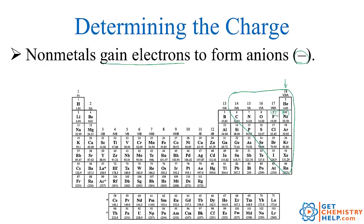If fluorine gains one electron, it becomes negative. Chlorine is one away from argon — if it gains one, it has as many as argon and becomes negative. Bromine is one away from krypton, and iodine is one away from xenon. So, all of these nonmetals that are one away from noble gases all become one negative.